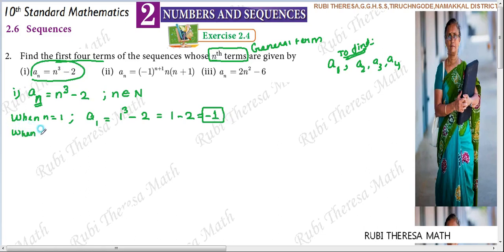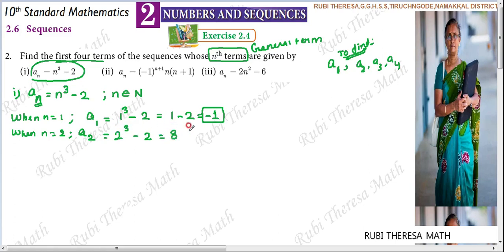When n equals 2, to find the second term, A2 = 2³ - 2. The value of 2 cubed is 8 — that is 2 × 2 × 2. So 8 minus 2 equals 6. The second term is 6.